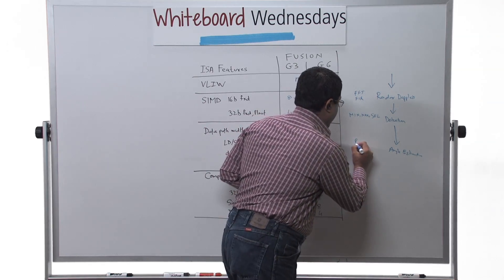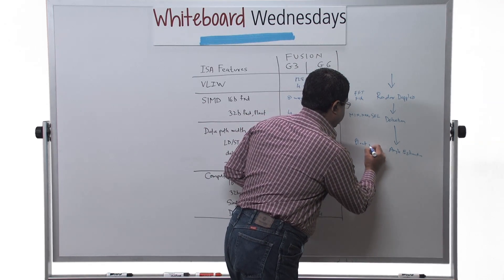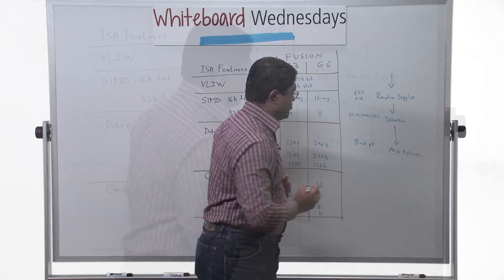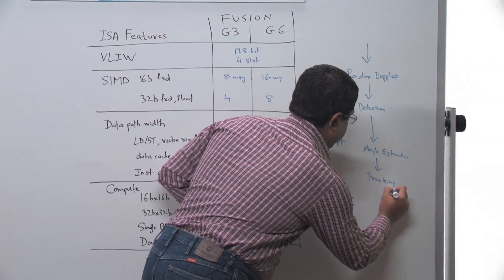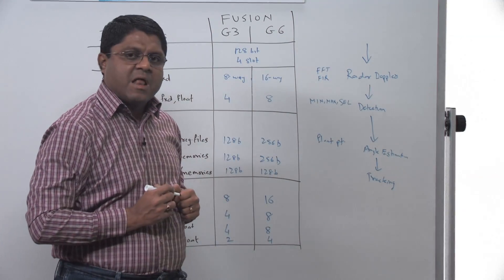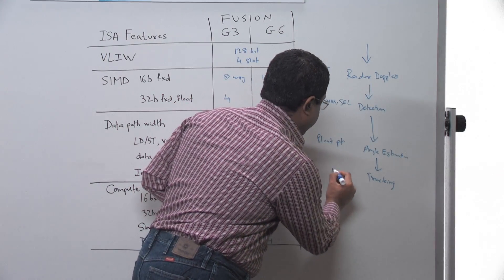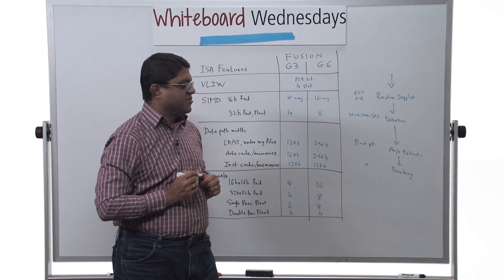the floating point support, floating point instructions of the G3 and G6 can be used. And then there is a tracking module which implements tracking algorithms like the Kalman filters where again the floating point support of the G3 and G6 can be used.